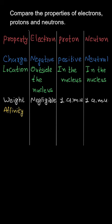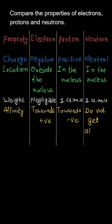Now to compare the affinity, we know that electrons are attracted towards the positive charge, whereas protons will be attracted towards the negative charge. Neutrons won't get attracted to any of the charges as they are neutrally charged. Thank you.